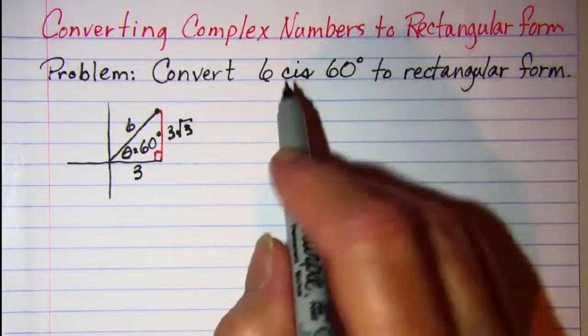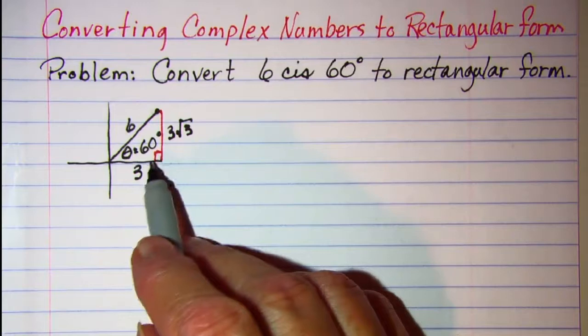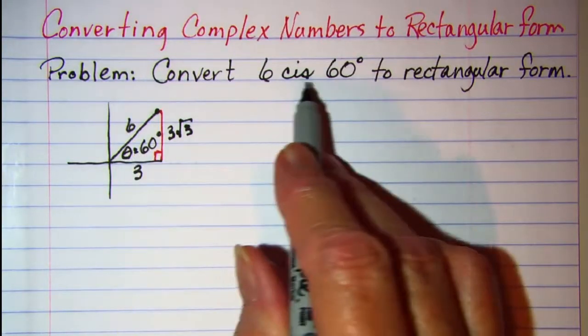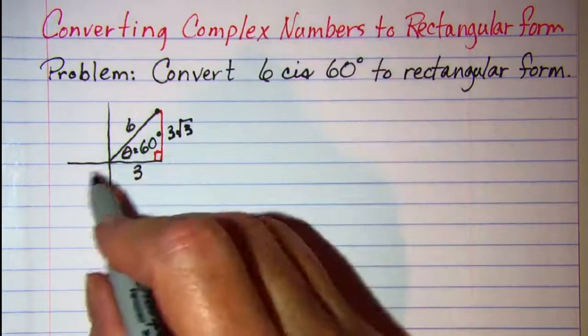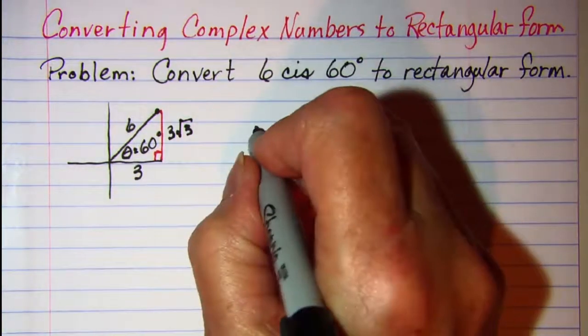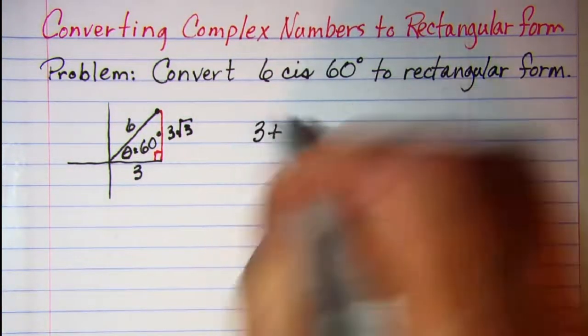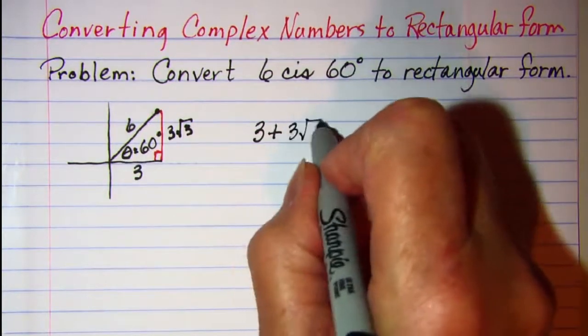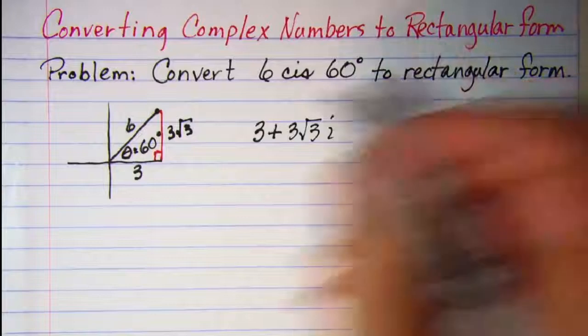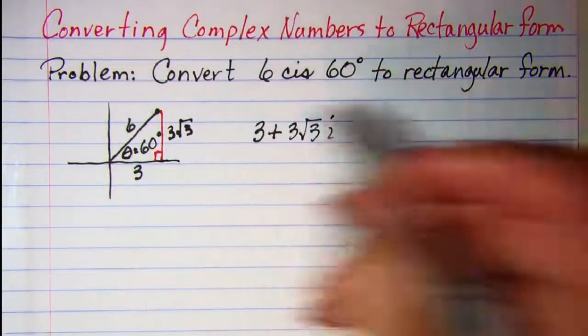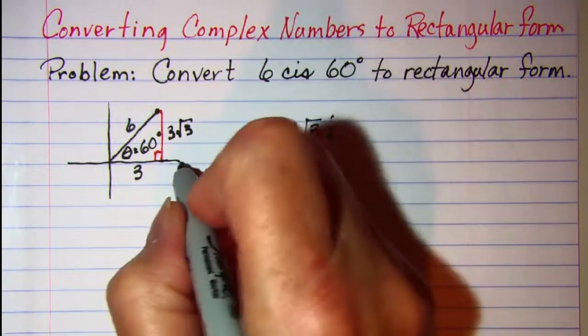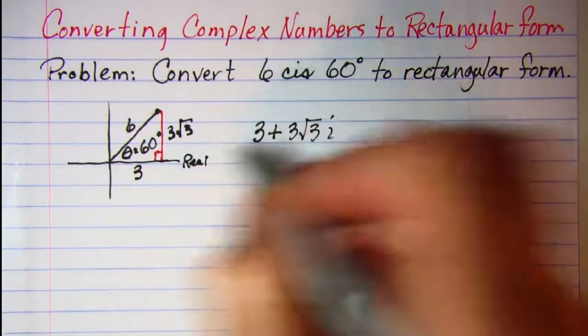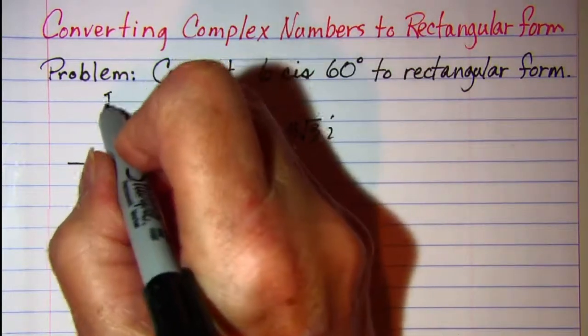So our rectangular form for this 6 cis 60 would be 3 plus 3 root 3 i. Remember that when we're dealing with complex numbers this is our real axis and this is our imaginary axis.